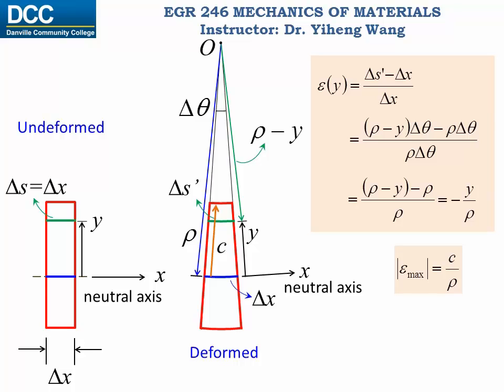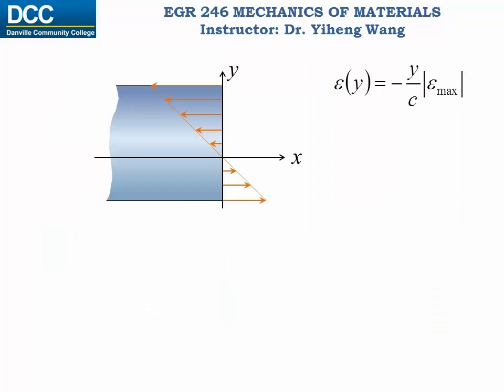Therefore, at this cross section, the normal strain at the arbitrary location y linearly depends on its location y. This linear relation of the normal strain along the y axis can be visualized here, with the maximum normal strain occurring at this top edge.